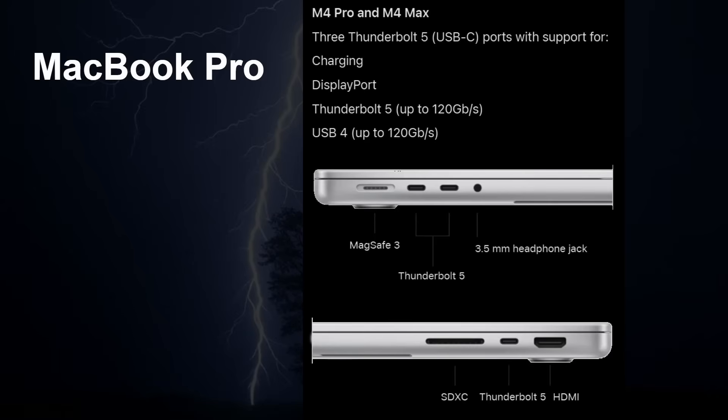For the MacBook Pro, life is pretty simple. You get three Thunderbolt 5 ports — two on one side and one on the other side, along with an HDMI port. They also support USB 4. So if you've got a MacBook Pro M4 Pro or M4 Max, you get Thunderbolt 5 with no worries.